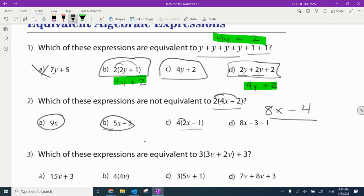Part C or choice C, 4 times 2x would be 8x. 4 times negative 1 is minus 4. That is equivalent. So it wouldn't be an answer here. And then this one minus 3 minus 1 is also minus 4 with the 8x. So that one also would be equivalent. So it's not not equivalent. So it's just choices A and C.